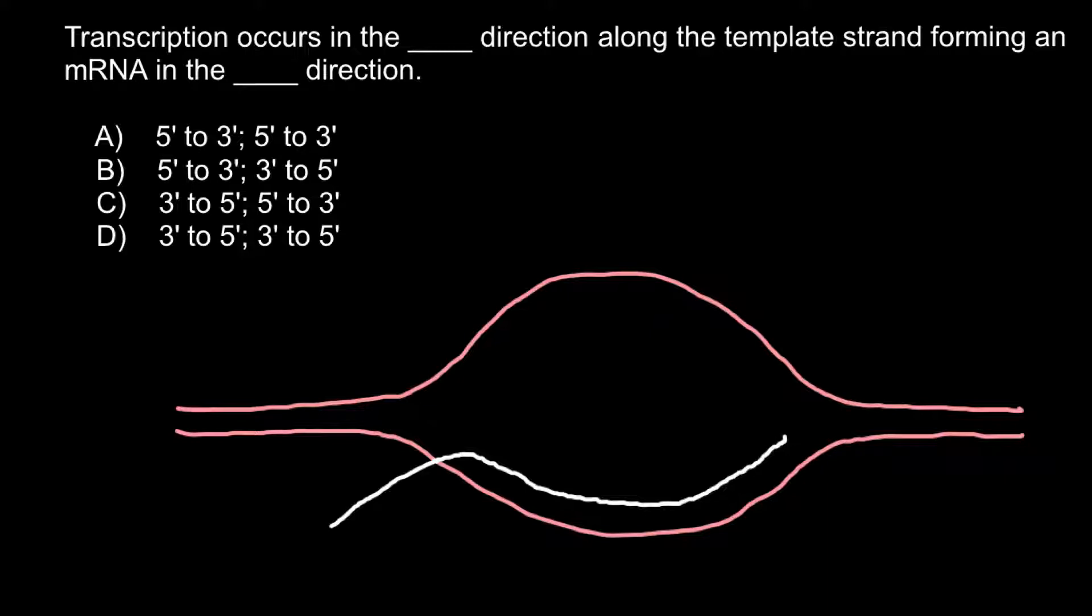of the message RNA is 5 prime, and this is very easy to memorize. That also means the other end is 3 prime, and this also gives us the 5 prime end of this template strand of the DNA.